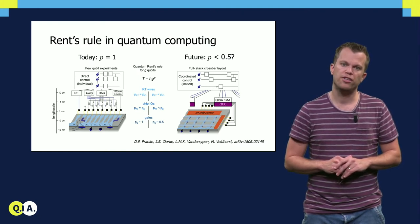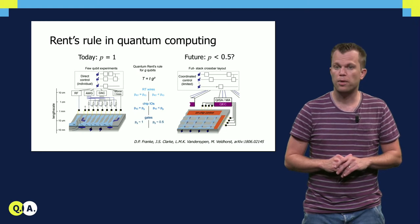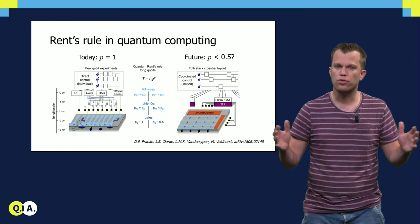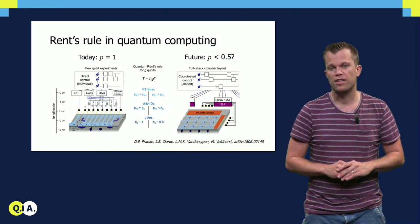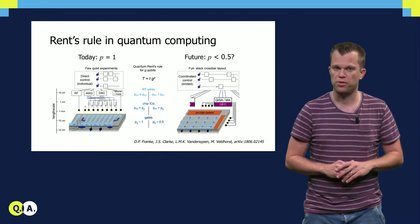Concepts from classical memory technology, such as crossbar layouts, where signals only have to come from the sides to address a large array, are now being proposed as an efficient way forward for quantum systems.